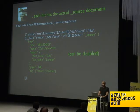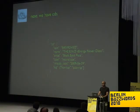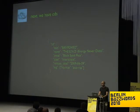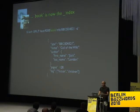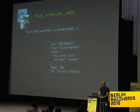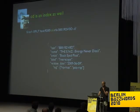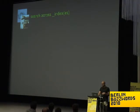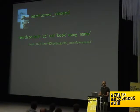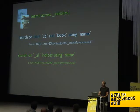Our Amazon store is doing well and we want to start selling CDs as well. The CD JSON document has some similarities to our book — it has a name and tagging information, but also other fields. Let's index it. If we want to search across indexes or types, we send a curl request and list the types or indexes we want to search on — in our case, CDs and books. We can also search for everything, across all indexes and all types.